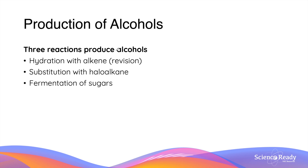In this video we'll be discussing different production methods of alcohol compounds. In total there are three reactions that we can use to produce alcohols: hydration of alkenes, which is covered in more detail in the video titled 'Reaction with Alkenes'; substitution with a haloalkane; and fermentation of sugars, for example carbohydrates.